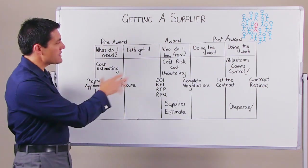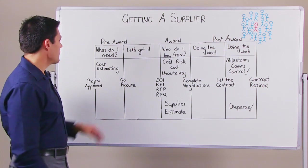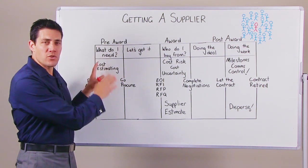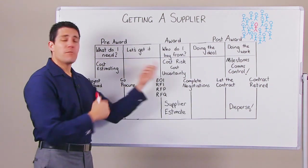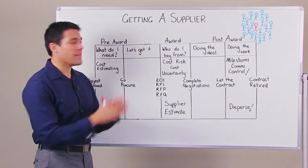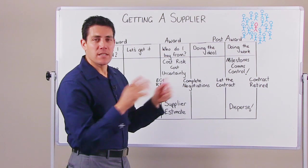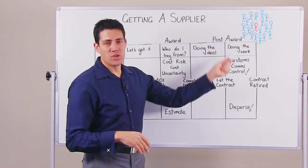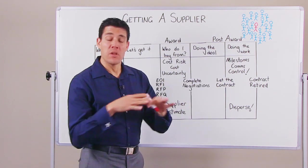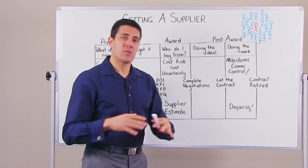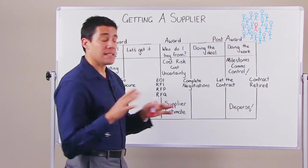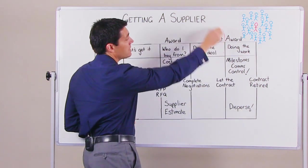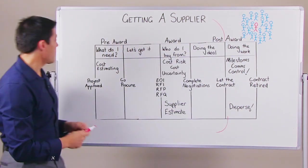In those phases, we've got some sub-streams here. We've got the point where you're trying to figure out what you need, going out to get it, figuring out who you're going to buy it from, and then actually doing the deal. Once the deal is done, managing and negotiating the contract, administering the contract to make sure that the project is meeting the objectives. In today's session, I'm only going to cover the first four bits.